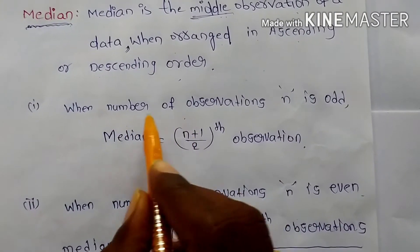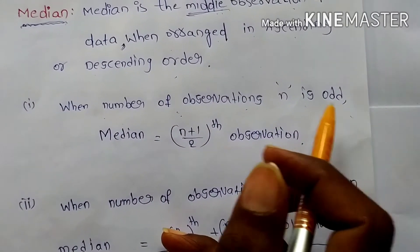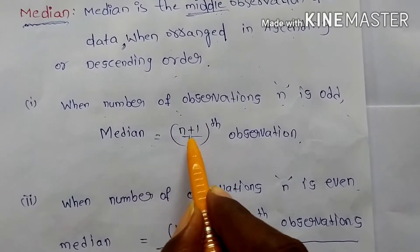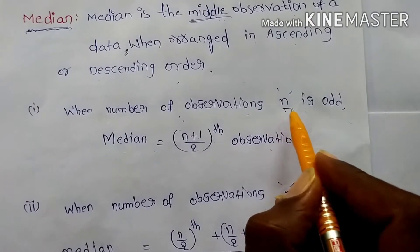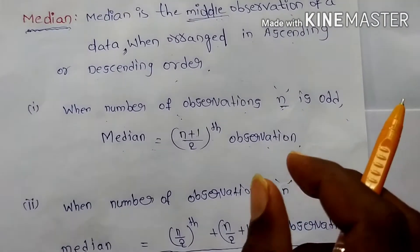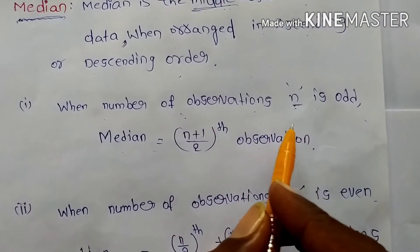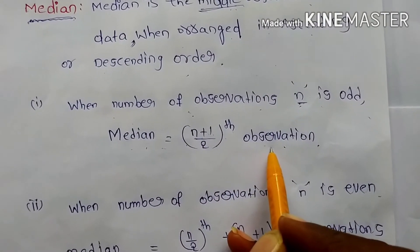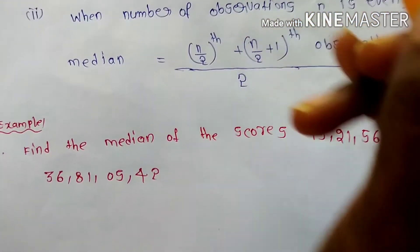The condition is: when the number of observations n is odd, median equals the (n+1)/2 observation. This formula applies only when n is an odd number, such as 1, 3, 5, 7, and so on.